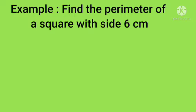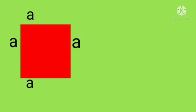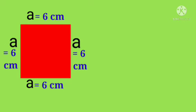Let's look at an example. Find the perimeter of a square with sides 6 centimeters. This is a square with each side a equal to 6 centimeters.